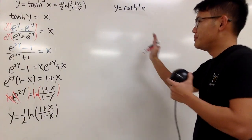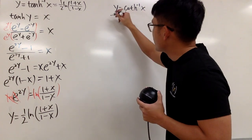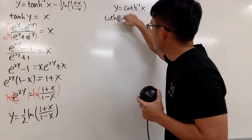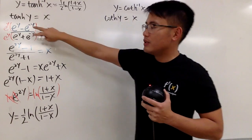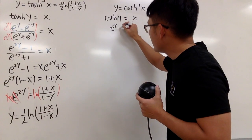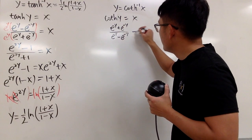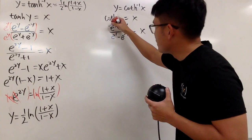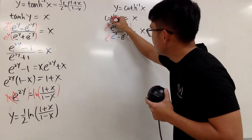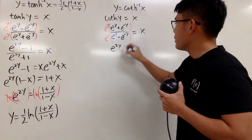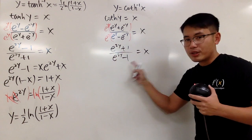Now let's do the inverse hyperbolic cotangent, speeding up a bit. Take the hyperbolic cotangent of both sides: coth(y) equals x. This is just the reciprocal of tanh, so we get e to the y plus e to the negative y, over e to the y minus e to the negative y, equal to x. Multiply the top and bottom by e to the positive y. This gives e to the 2y plus 1, over e to the 2y minus 1, equals x.